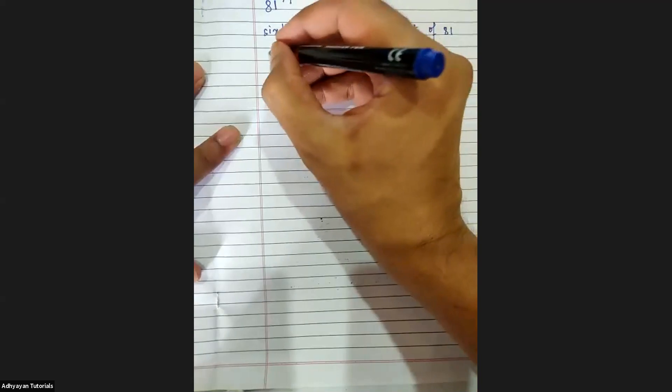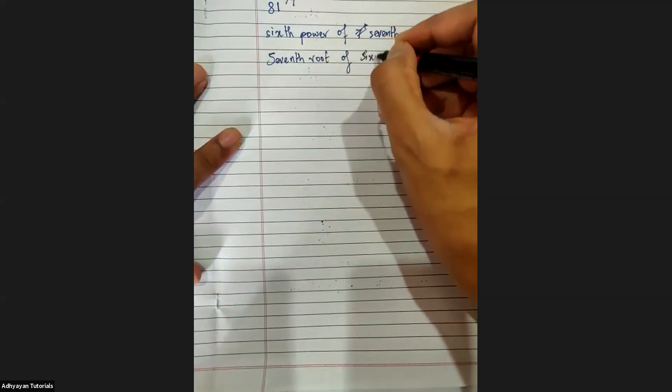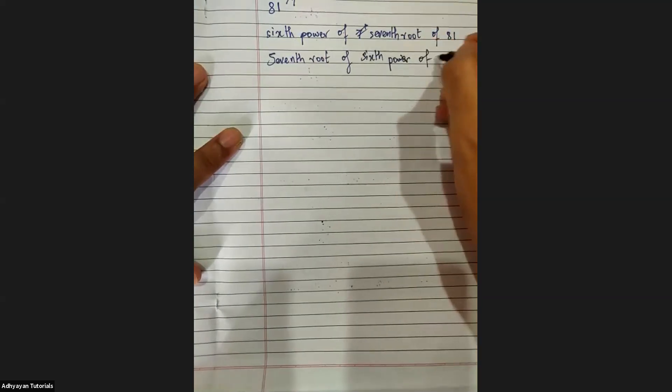Kevin from Saahedam, don't be lazy — don't write in number form, write the words seventh and sixth. Janisha, correct. Ashish Gupta from Saahedam, correct answer. The answer is: seventh root of sixth power of 81.